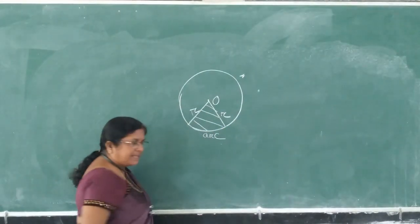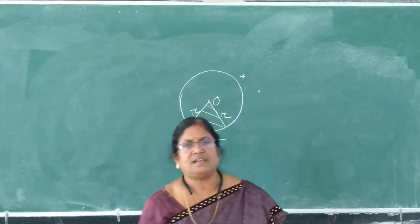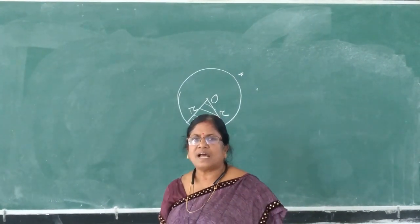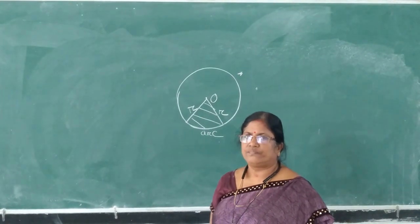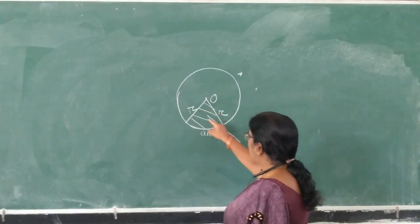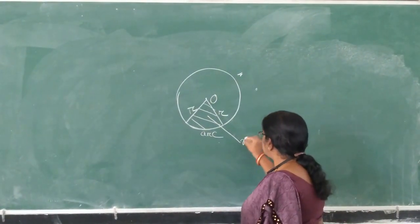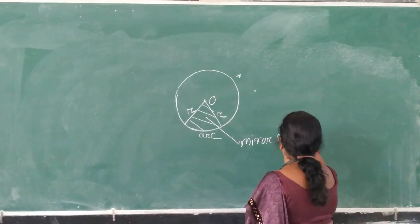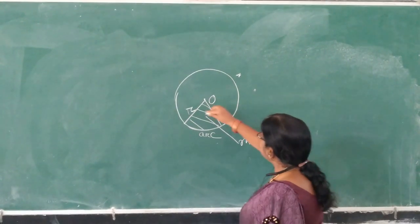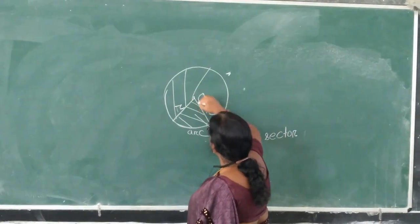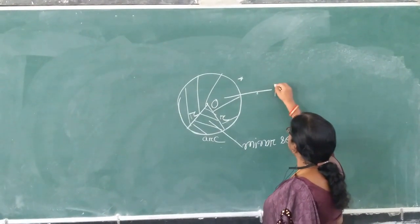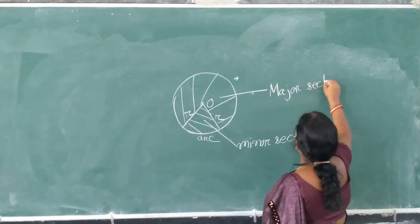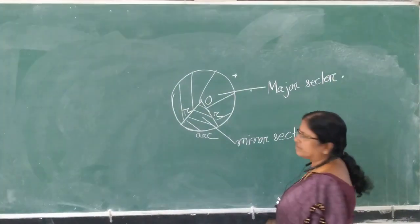That means, the sector of the circle is the region bounded by two radii and an arc of the circle. Since this sector is a small sector, so this is known as Minor Sector. This portion is also another sector, so it is more large, Major Sector.